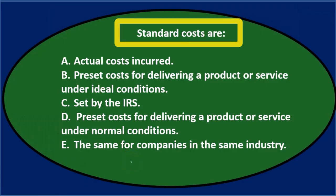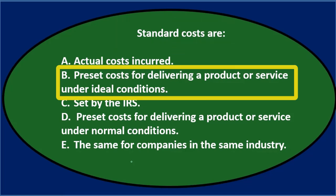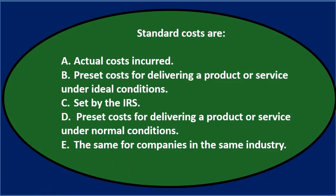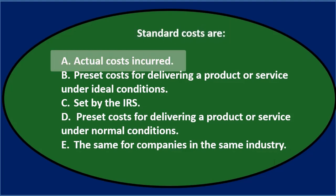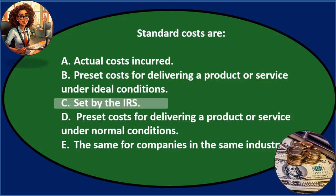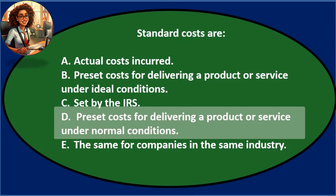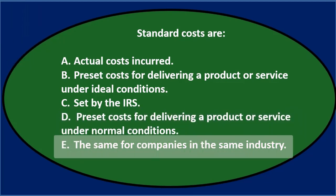First question: Standard costs are — A. Actual costs incurred. B. Preset costs for delivering a product or service under ideal conditions. C. Set by the IRS. D. Preset costs for delivering a product or service under normal conditions. And E. The same for companies in the same industry.